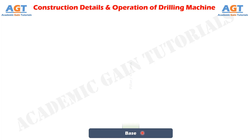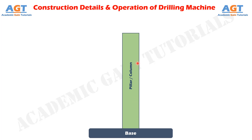Above the base there is a pillar or column. The pillar is a type of vertical column that usually rests at the center of the bed. The pillar provides support to the motor and the spindle head. This column is also made of cast iron or steel and is very rigid so that it can carry the load of the arm as well as the drill head.